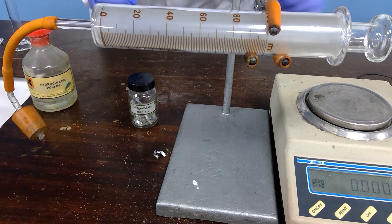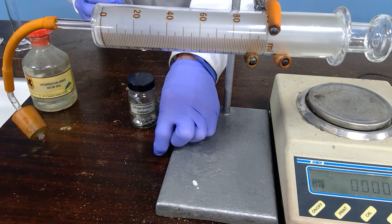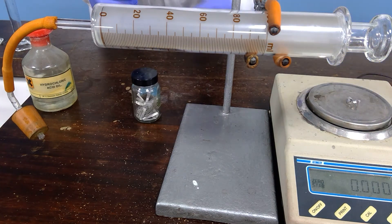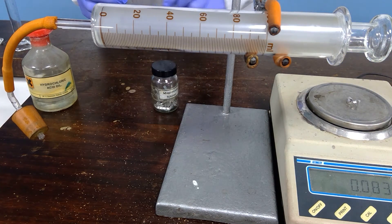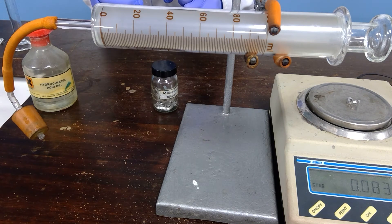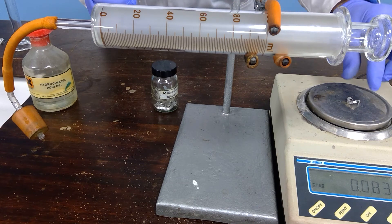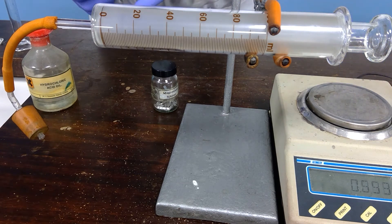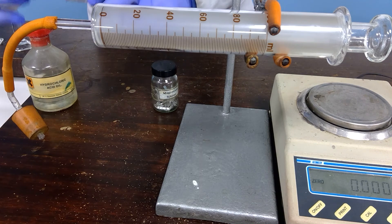And we work with the third one, checking that the balance is at zero. We take the mass of the third piece of magnesium. Okay, that is settled. And once again we place that into the top.